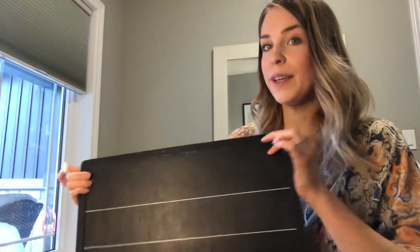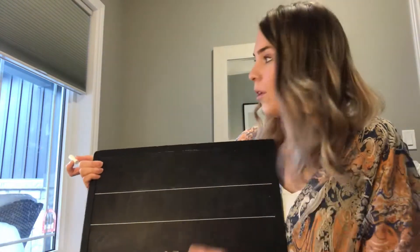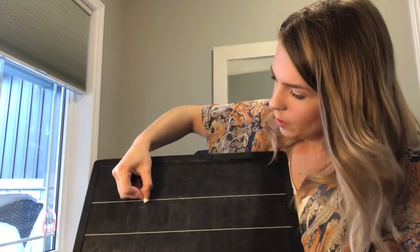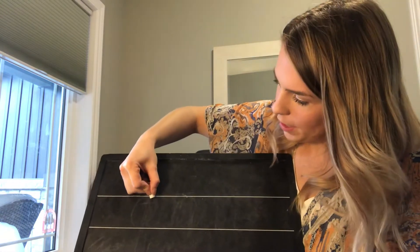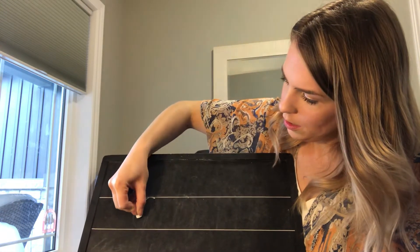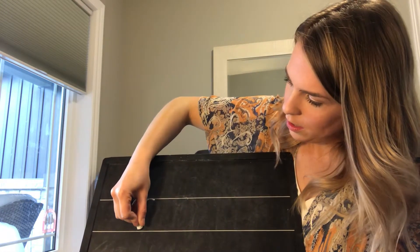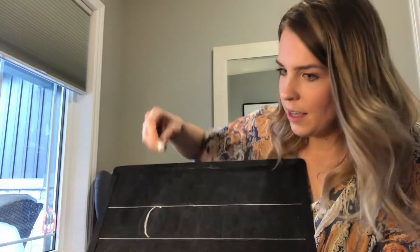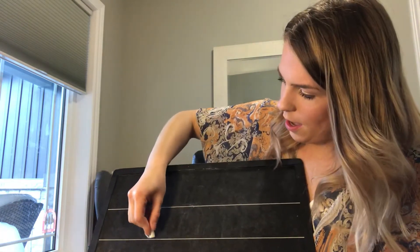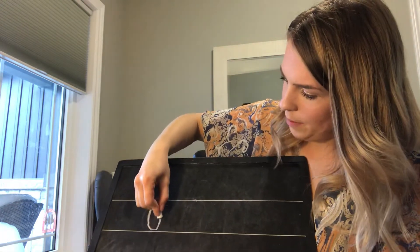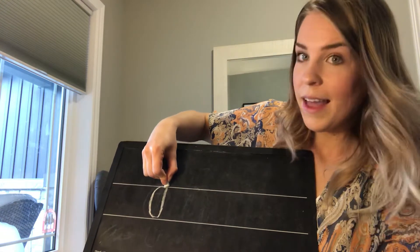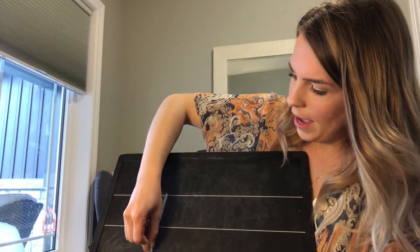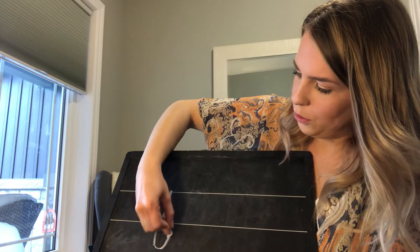To start our letter Q, we're going to start with a magic C. So we're going to make our magic C. That is our C. And we're going to go up like a helicopter. And then we're going to go back down. And U-turn.